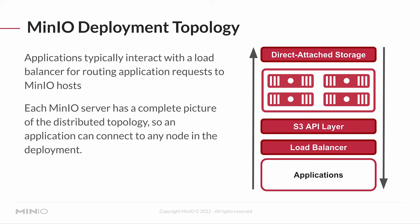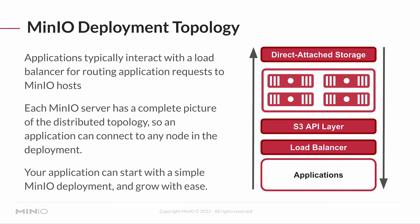Each MinIO server has a complete picture of how its topology is distributed. If I have four systems running MinIO and each has four drives, I've got 16 drives, each of which may have a piece of the data. But each individual MinIO server knows where all of that data is, so you can connect to any node in the deployment. If a server goes down, as long as I'm using the load balancer, I have automatic failover — even if half the drives disappear, my data is still intact. Your application can start with a very simple MinIO deployment and grow with ease, because you're not having to recode to go to S3.